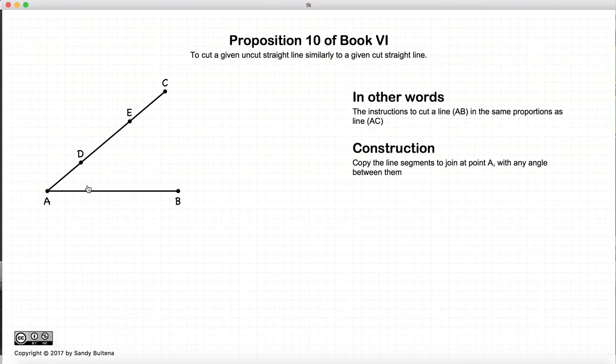So how do we do that? The first thing we do is we draw the line CB, and then we construct lines GE and DF such that they are parallel to the line BC. We do that using Proposition 31 of Book 1.